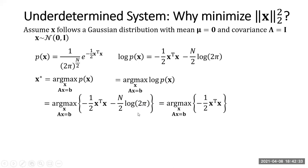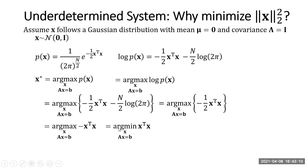The constant term is independent of x, so we drop it. This becomes argmax of negative x-transpose x. Maximizing negative x-transpose x is the same as minimizing x-transpose x. So x-star equals argmin over x of x-transpose x — which is the L2 norm squared — subject to Ax = b. This defines our constrained optimization problem for underdetermined systems.